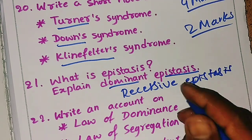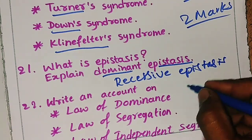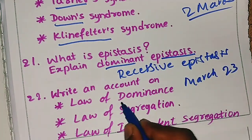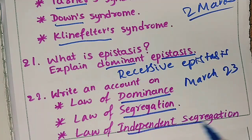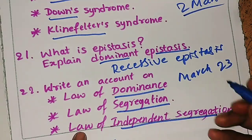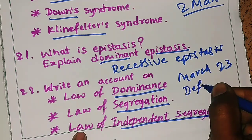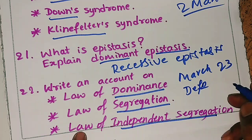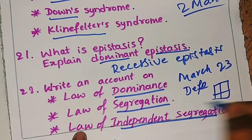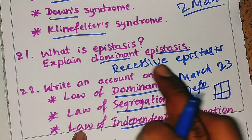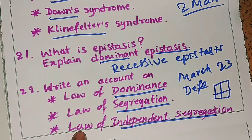Your exam is in March 23 onwards. The twenty-second question is: write an account on the law of dominance, law of segregation, and law of independent assortment — these are Mendel's laws. Write the definition, the Punnett square, and the phenotypic and genotypic ratios. It may also be asked in two marks, so be prepared.